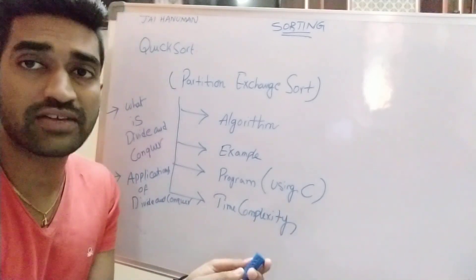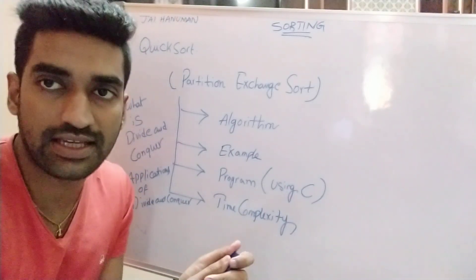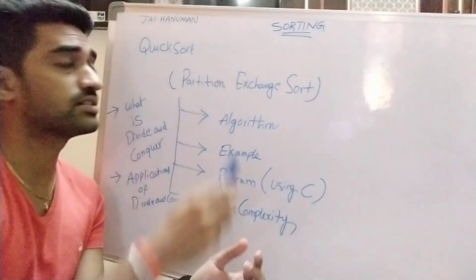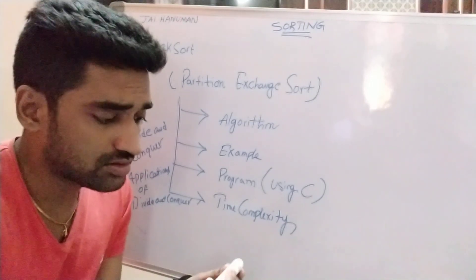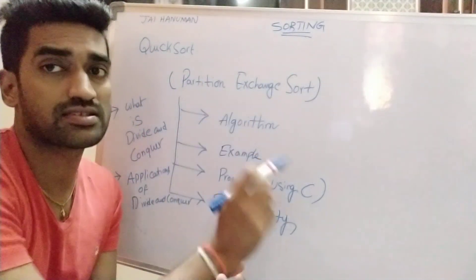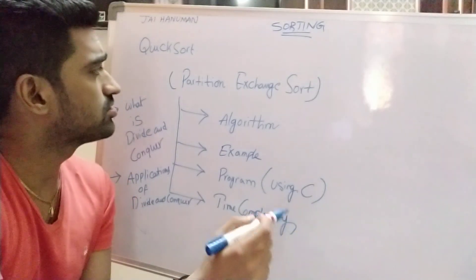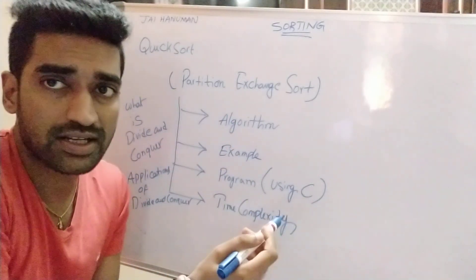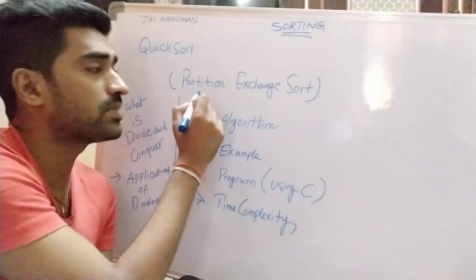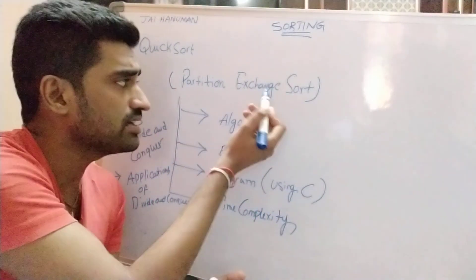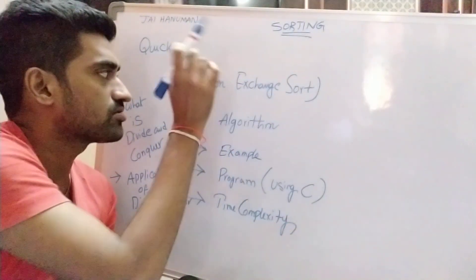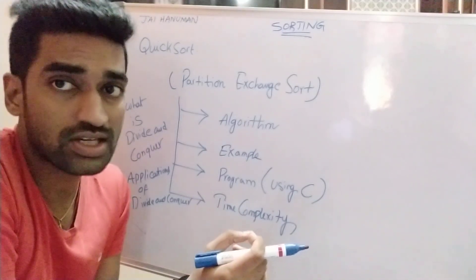In the previous session we discussed insertion sort. In this session we are concentrating on one more sorting technique, that is the quicksort mechanism. Quicksort is also called partition exchange sort because the entire array is divided into several partitions before performing the sorting operation, and then we apply the exchange mechanism on the array.